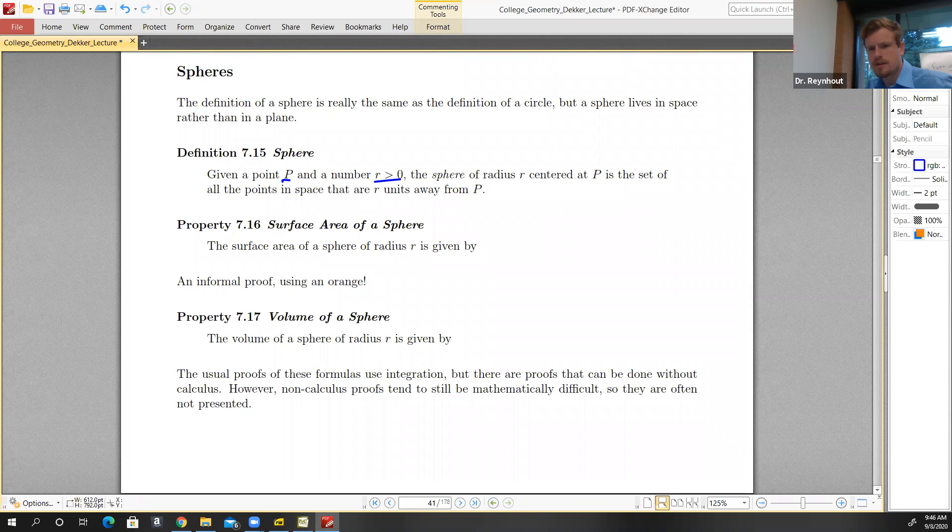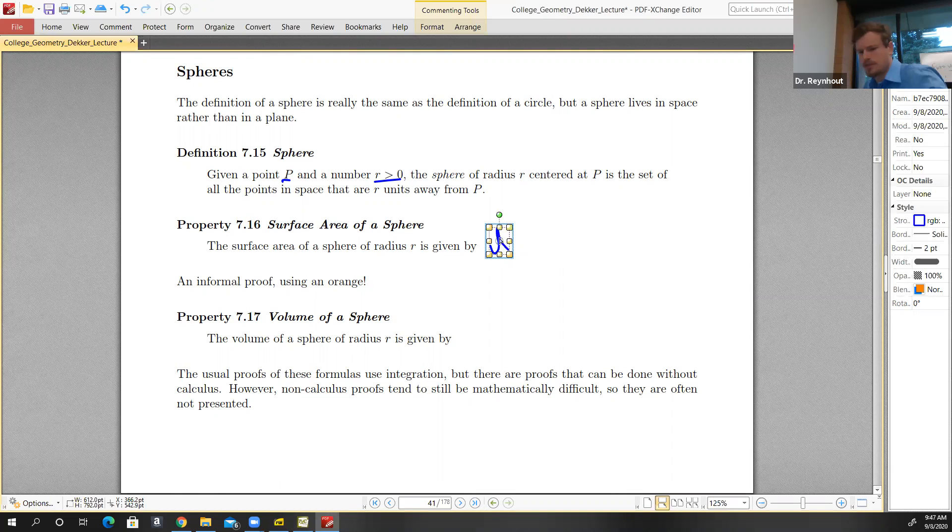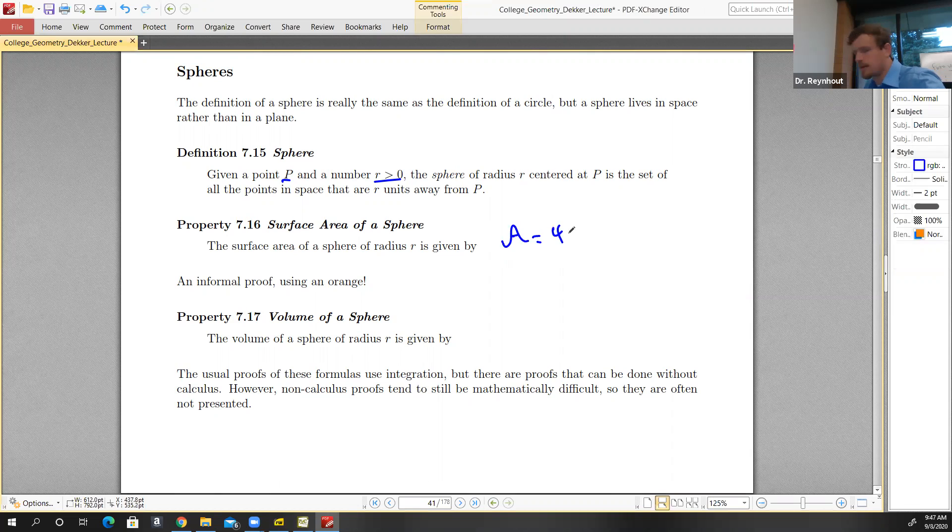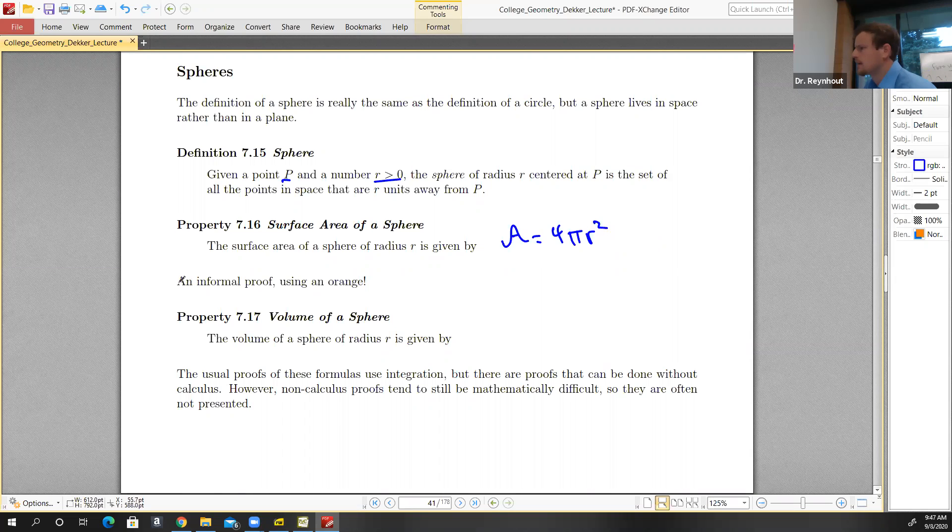The surface area of a sphere is given by area equals 4πr². Now, this informal proof using an orange, we're not going to do that.